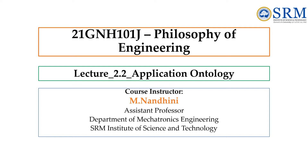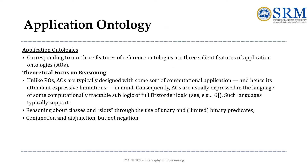In this lecture we will explore the concept of application ontology. So far we have seen the reference ontology, which aims to represent reality as it is — independent of human perception. Today we shift our focus to application ontology, which is a more practical, problem-oriented approach. When you use Google Maps, how does it know the best route? When an AI-based medical system diagnoses a disease, how does it decide which treatment is suitable? These systems rely on application ontologies, which are knowledge models custom-built for specific tasks. Unlike reference ontologies, application ontologies focus on solving real-world problems efficiently.